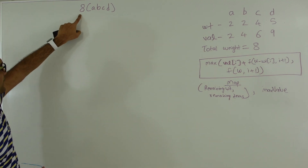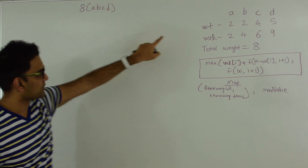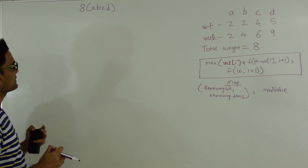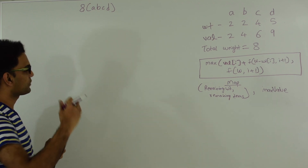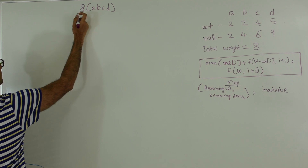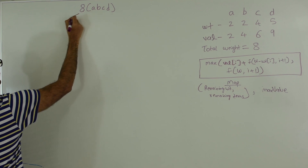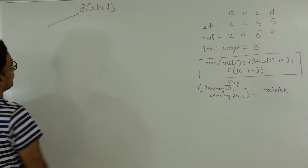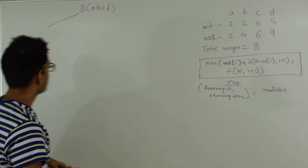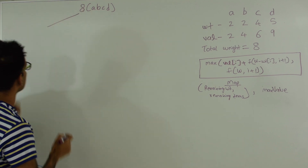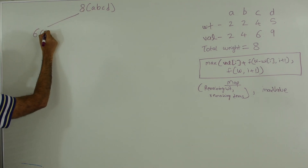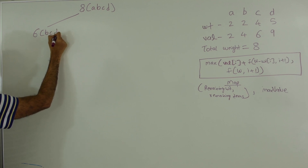We're going to start with total weight 8 and all 4 items available. On the left branch we are going to pick the item and on the right branch we are not going to pick the item. On the left side we pick item A. The weight of A is 2, so we're left with 8 minus 2 — only 6 weight — and items B, C, and D.